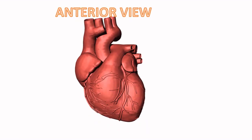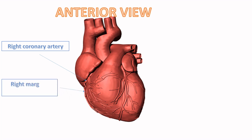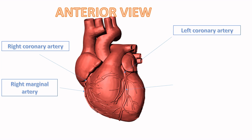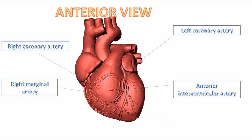Now we see the anterior view of the heart. We start with the right coronary artery. Below the coronary artery we see the right marginal artery. There we see the left coronary artery, and below it we see the anterior interventricular artery. Then we see the great cardiac vein.